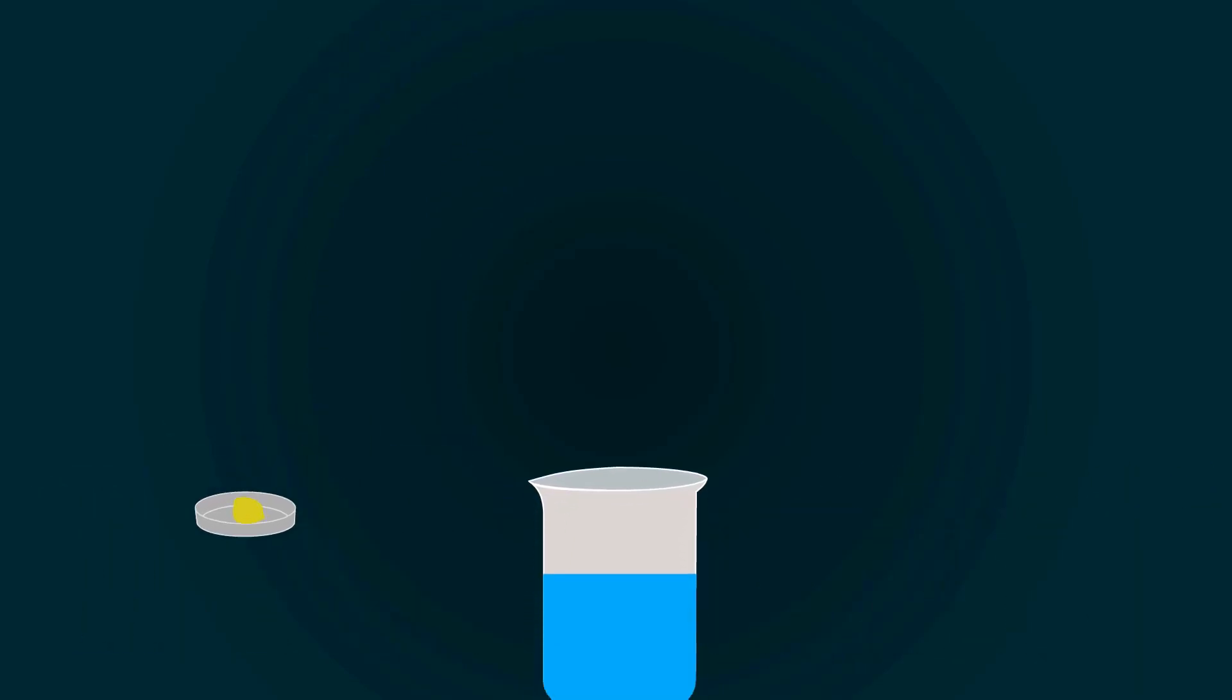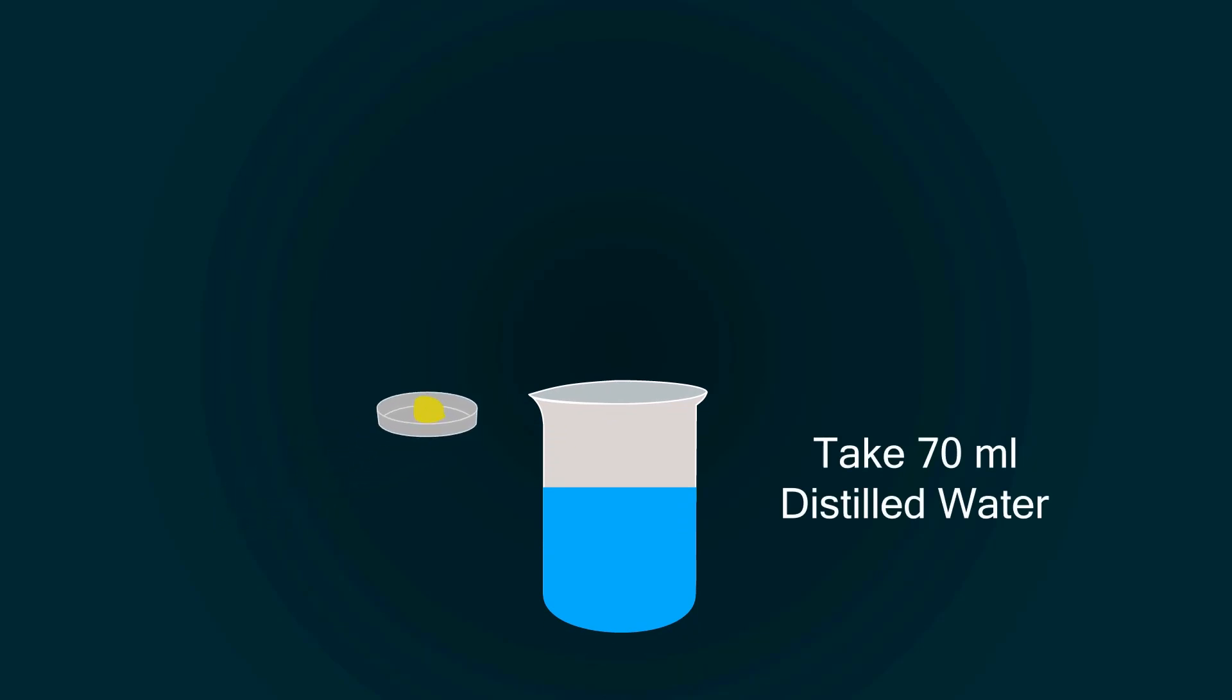Now take some distilled water in a beaker up to 70 milliliters and put the potassium chromate into it. Start mixing it with the help of a spatula to make a homogeneous mixture.